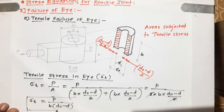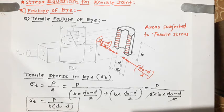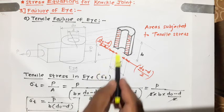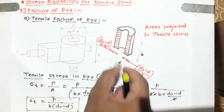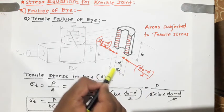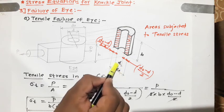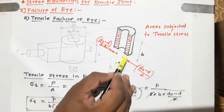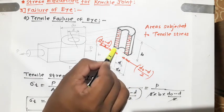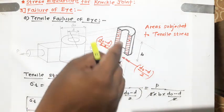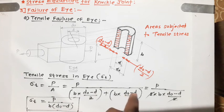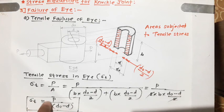So the equation of tensile stress in the I-end is σT = P / [b(D0 - d)]. The key point is that the two rectangular areas subjected to tensile stress each have height b (equal to the height of the I-end) and width (D0 - d)/2 (from the outer diameter D0 minus the inner diameter d). Adding both areas and simplifying gives the final tensile stress equation: σT = P / [b(D0 - d)].